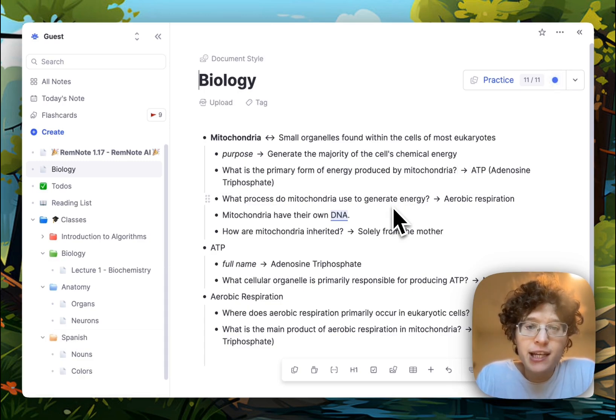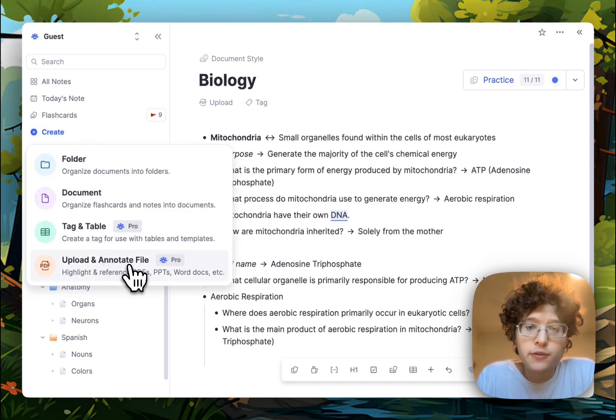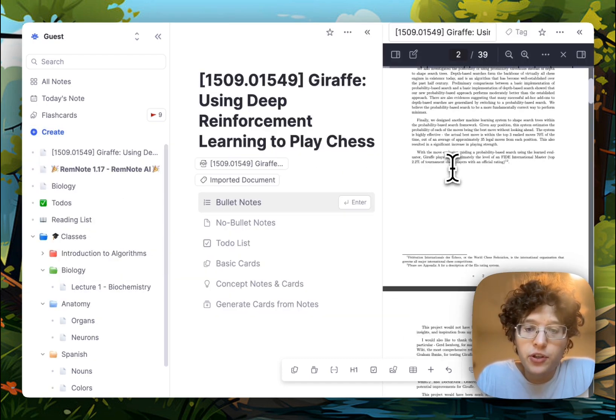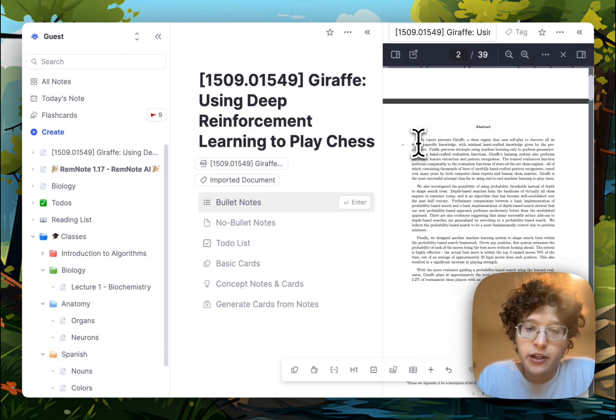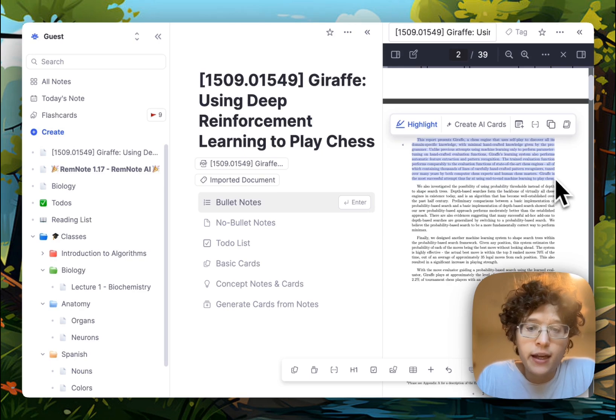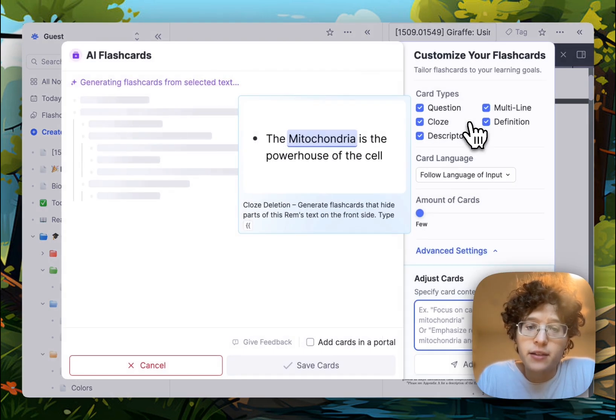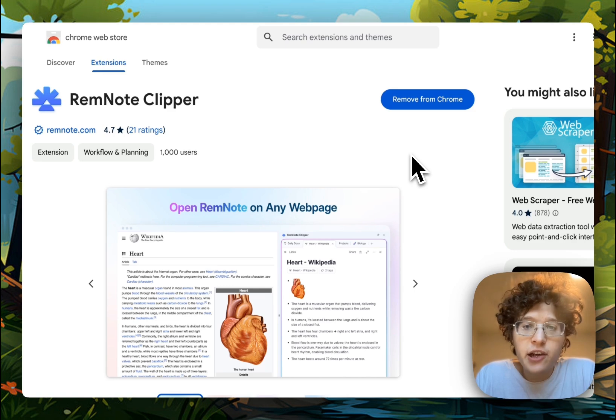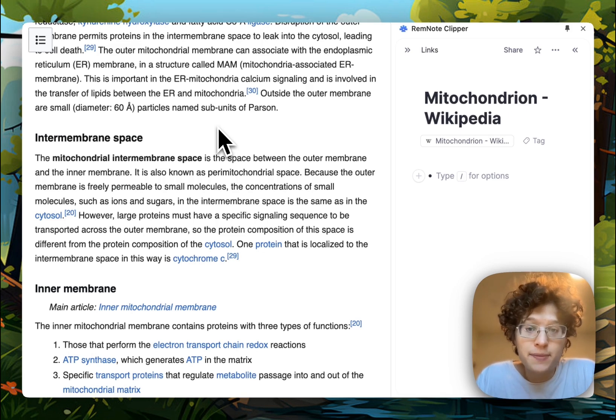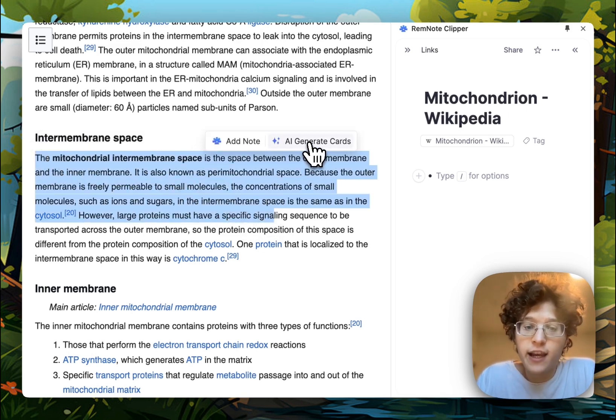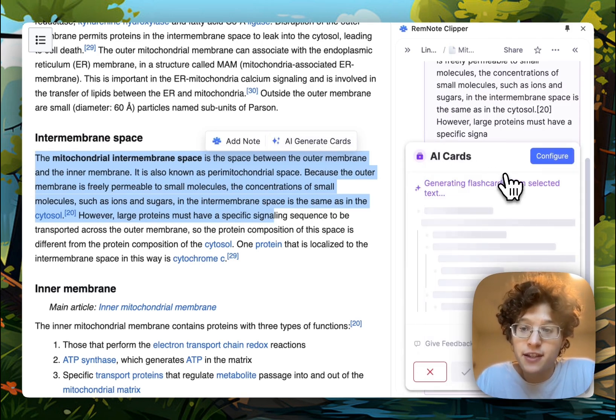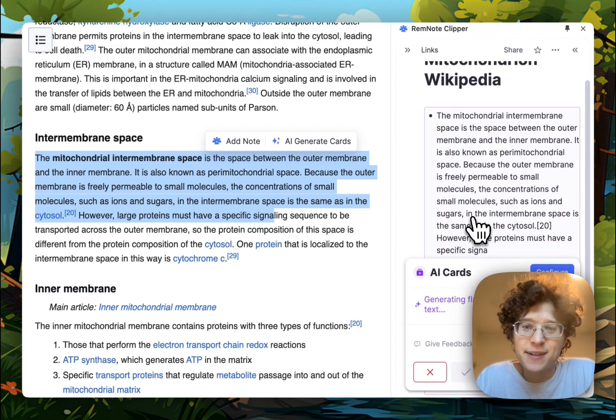You can also generate cards directly from PDFs and webpages. For a PDF, go to create and then upload your PDF. Once uploaded, you can go to any section that you want to generate cards from, select the text in there, and again just press the Create AI Cards button within your PDF. To generate cards from webpages, first search for and install the RemNote Clipper, and then open it on any page. After you open the Clipper side panel, you can then just select text on any webpage itself and press the AI Generate Cards button. You'll then be able to generate cards directly in RemNote here in the same way.